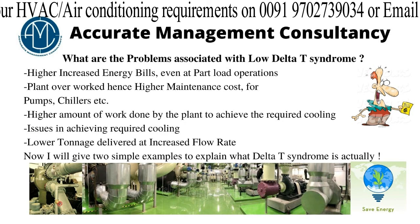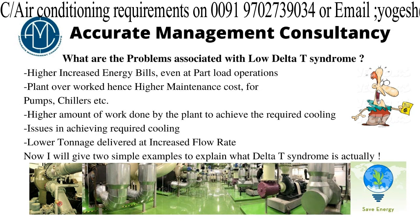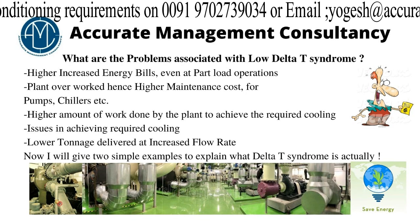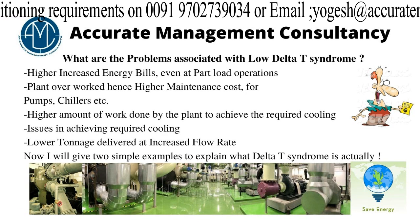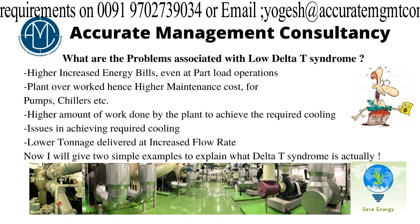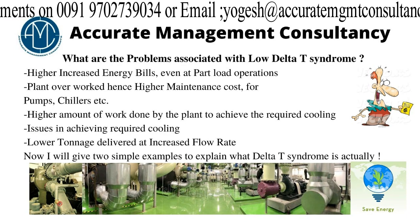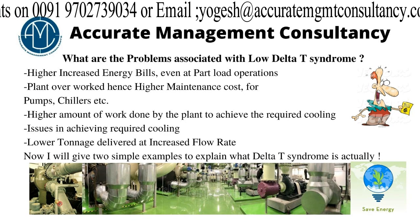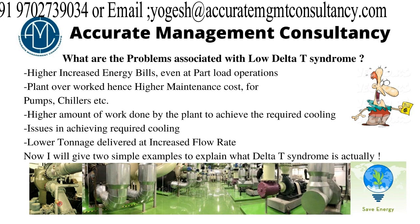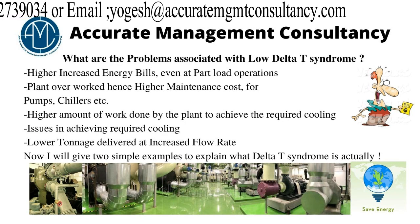In the sheets ahead we will prove it with simple calculations how low Delta T creates inefficiency in cooling. Lower tonnage is delivered at an increased flow rate because, as the design Delta T is not achieved, the required tonnage is not delivered — although tonnage is directly proportional to the flow rate. I will give you a simple example to show what low Delta T syndrome actually is and how it affects the performance of the plant.